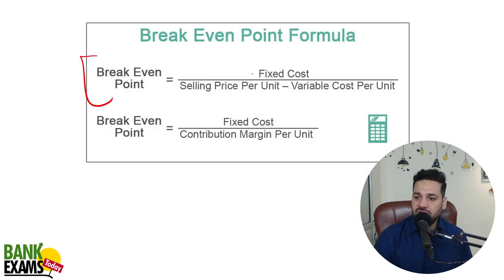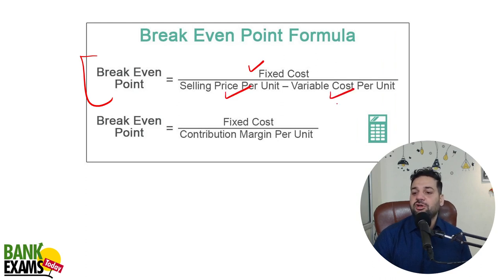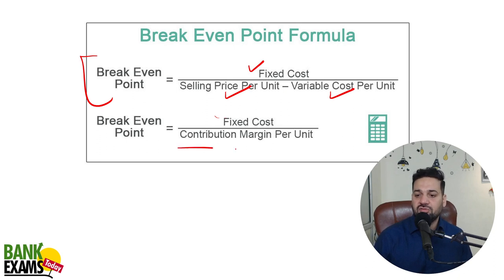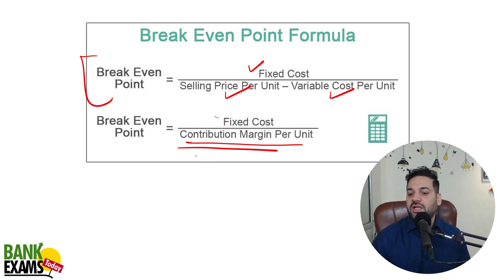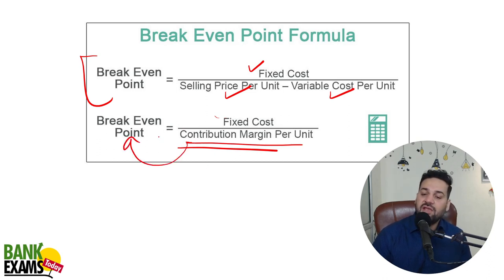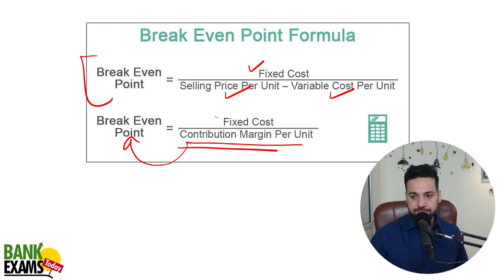We can do it in a mathematical format. Break-even point equals fixed cost divided by selling price per unit minus variable cost per unit. This is also known as contribution margin per unit. If you use contribution per unit, you will get the break-even point in units.